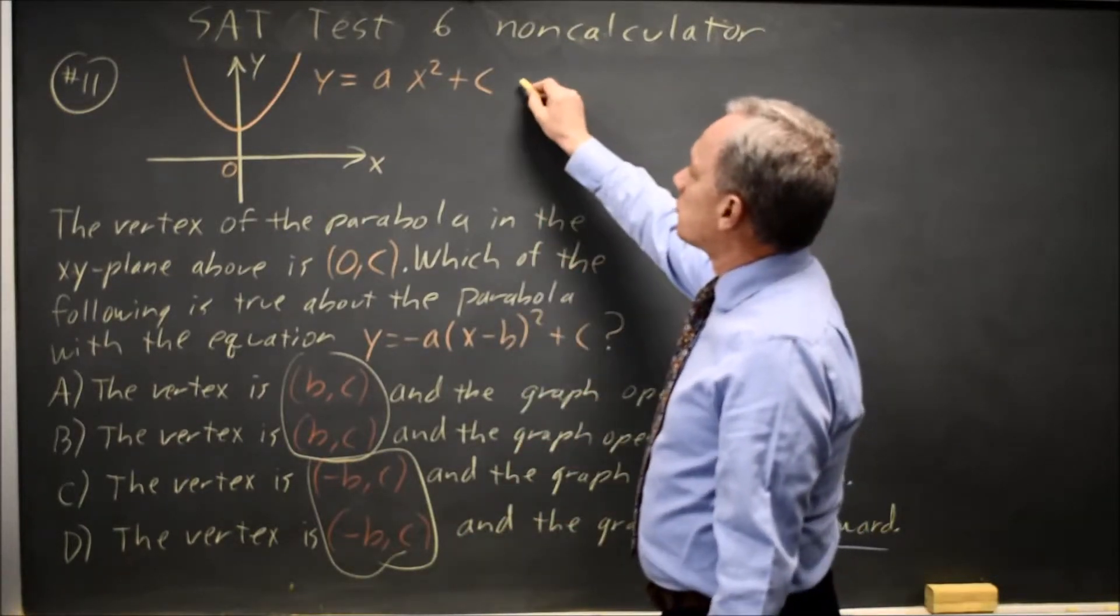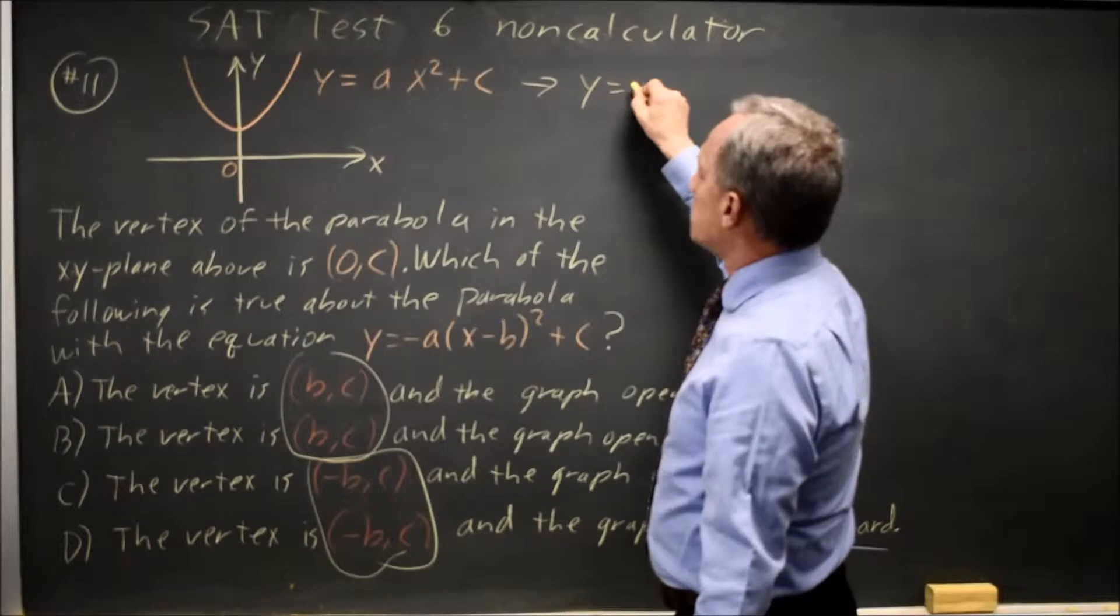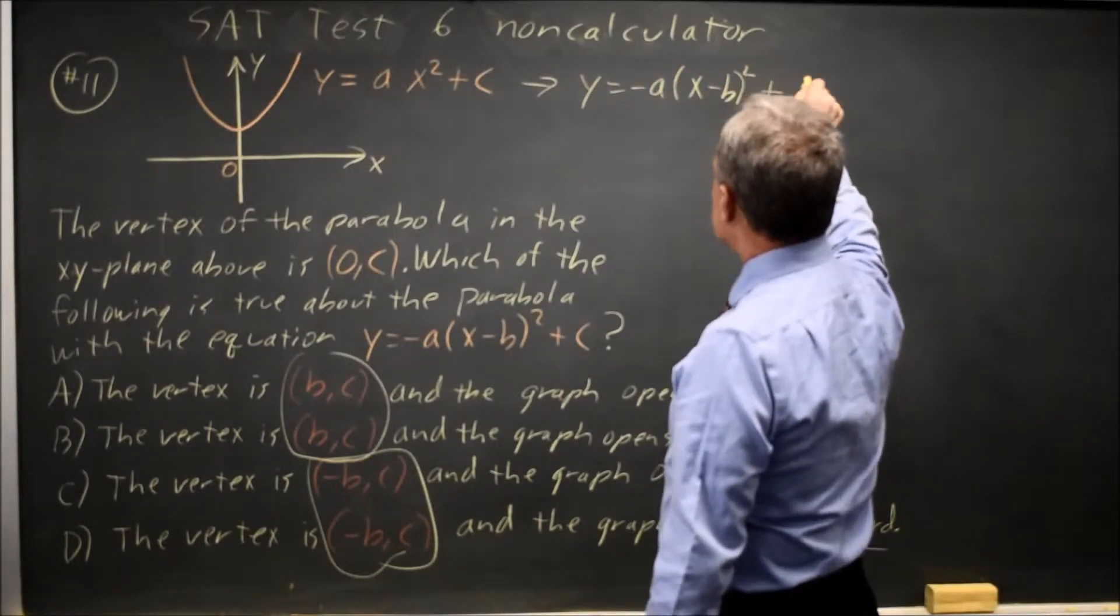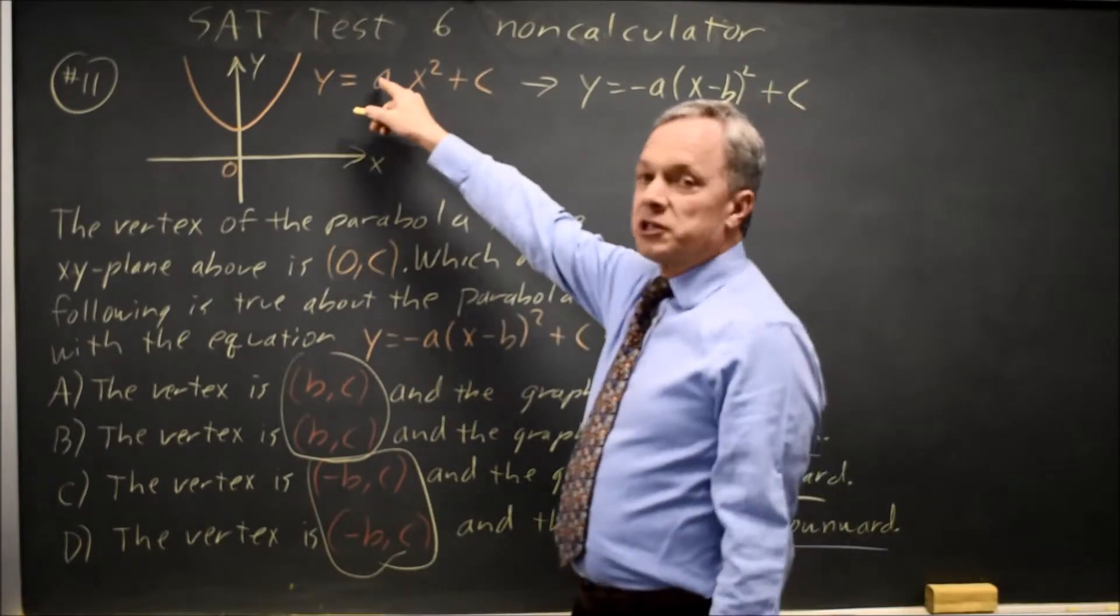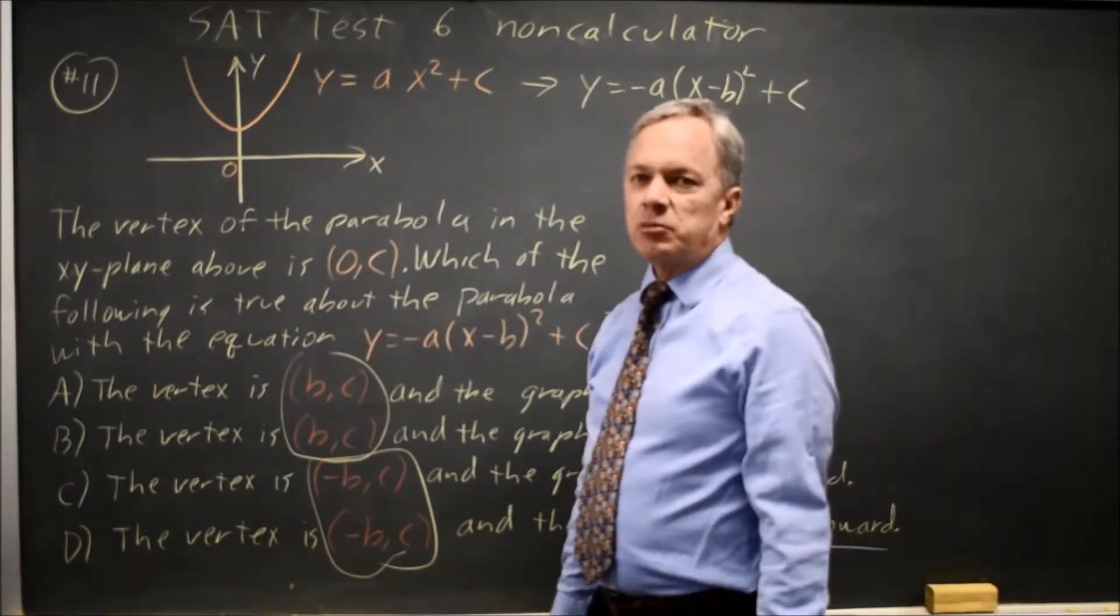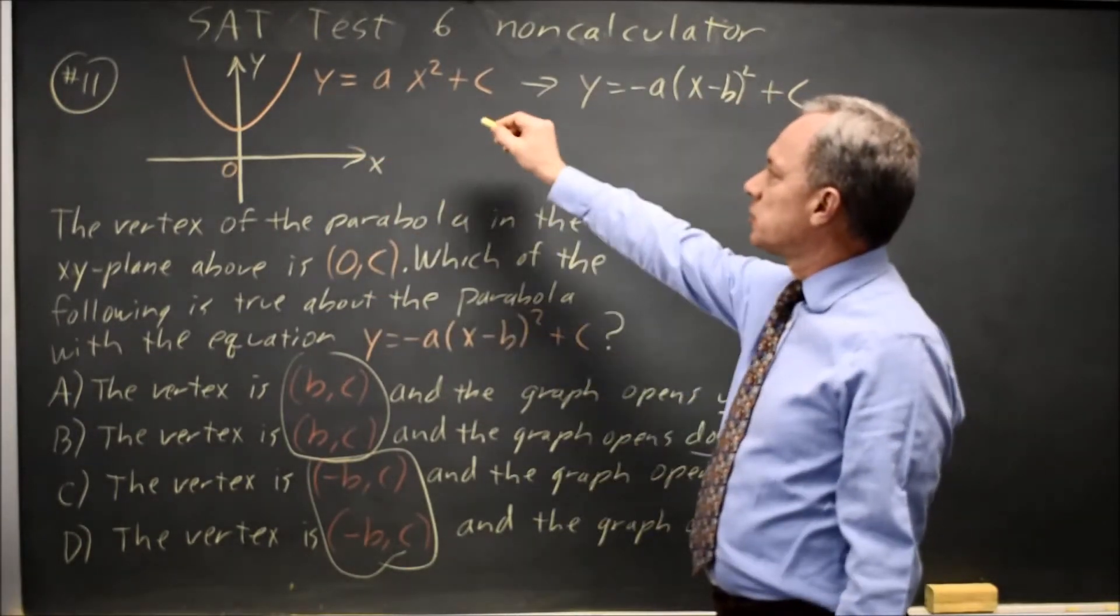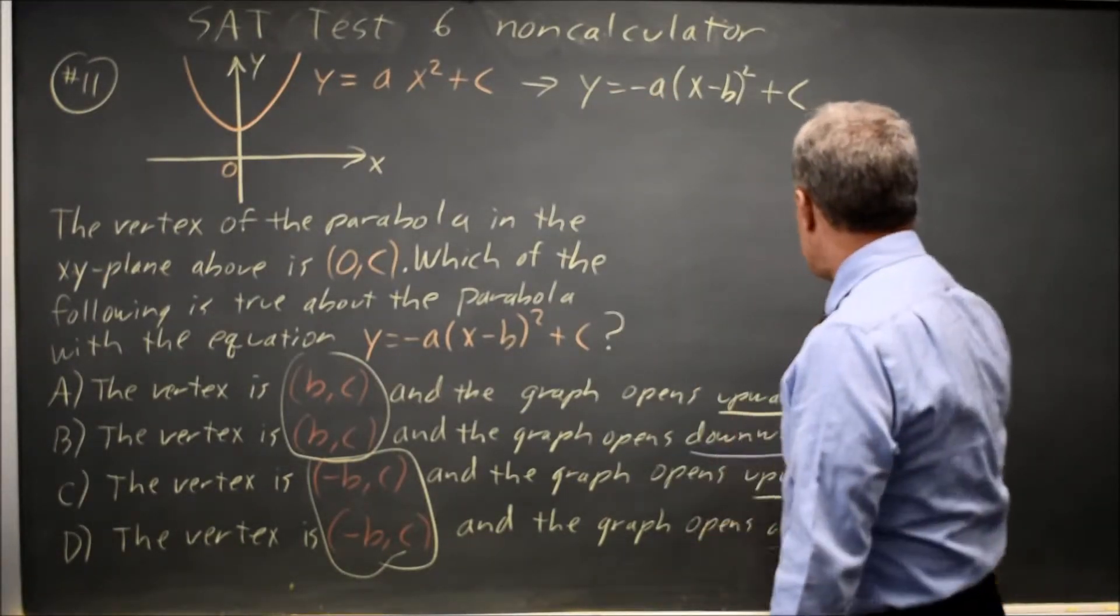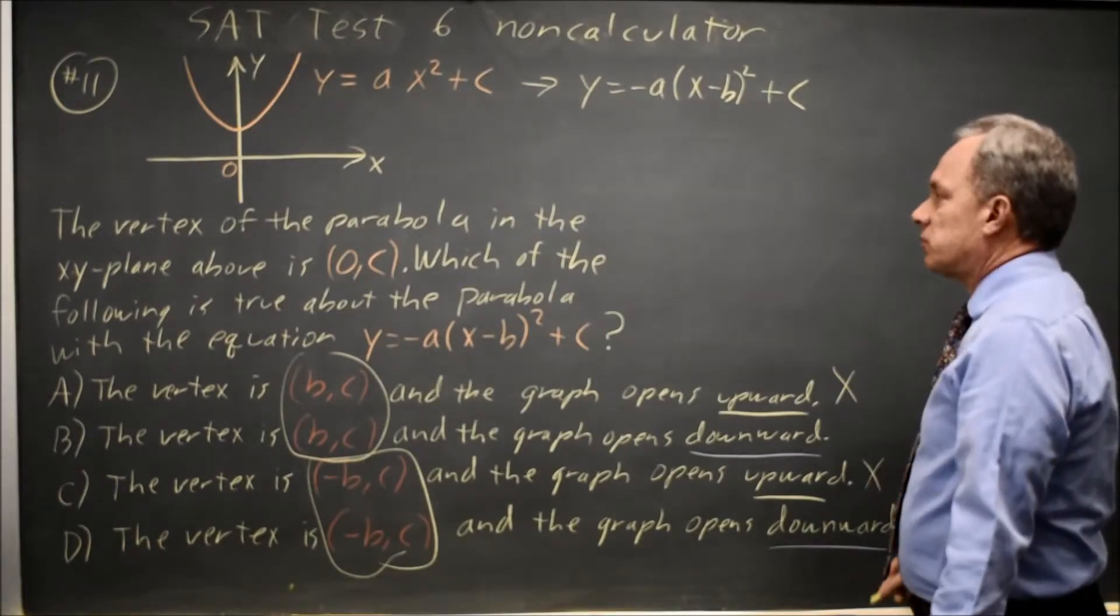So if you go from this equation to y equals negative a(x minus b) squared plus c, the original quadratic opened up. When you replace the x-coordinate coefficient with its negative, it will now open down. So choices a and c are wrong.